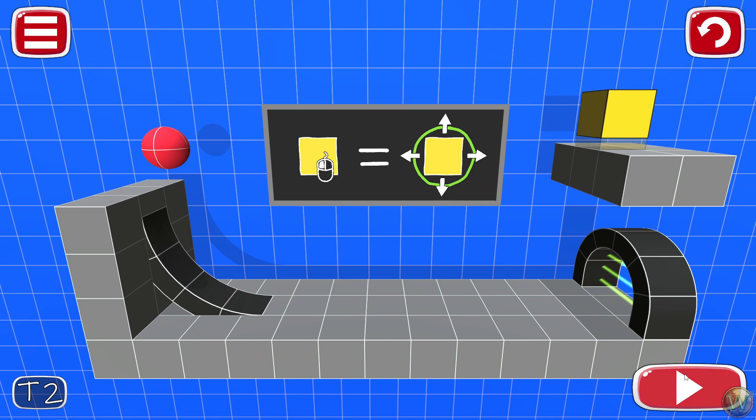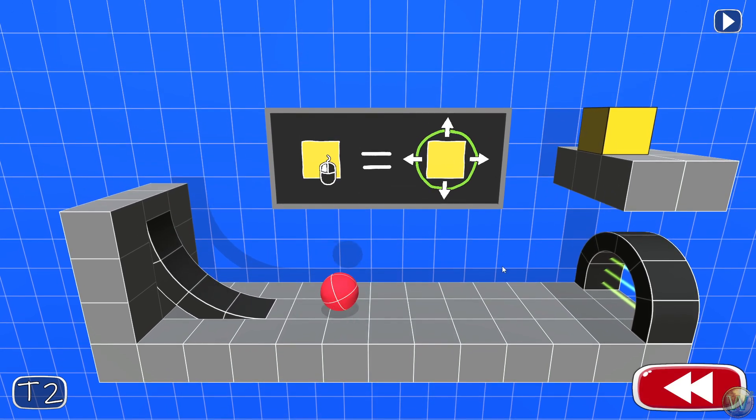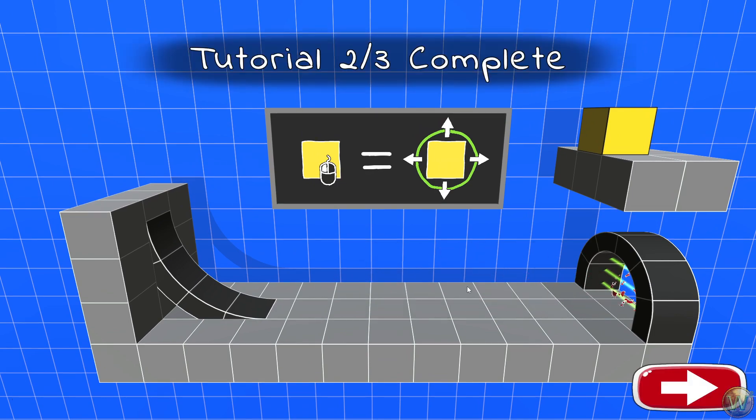So we need to move the cube up here above the exit so that it falls on this platform to clear the way for the ball to get to the exit.